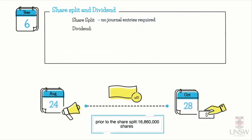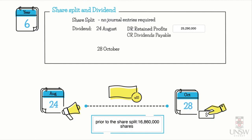We do have journal entries for the dividend. We record a journal entry on the 24th of August when the directors resolve to provide the dividend, and another on the 28th of October for the payment. To record the dividend being declared, we debit retained profits $25,290,000 and credit dividends payable $25,290,000.